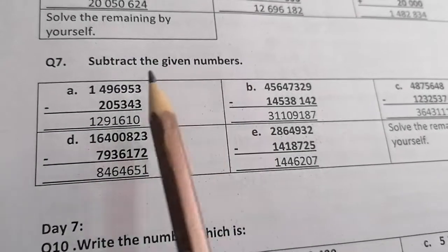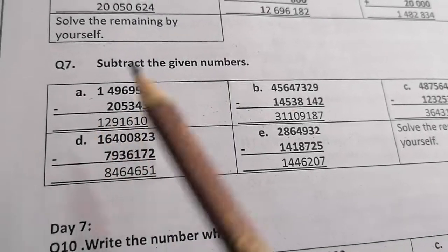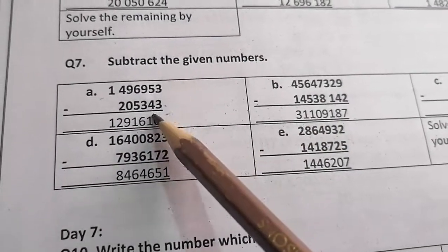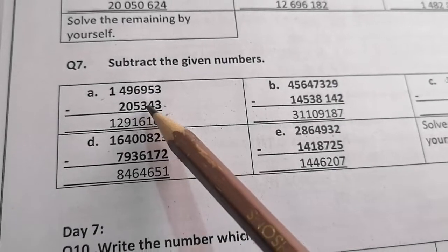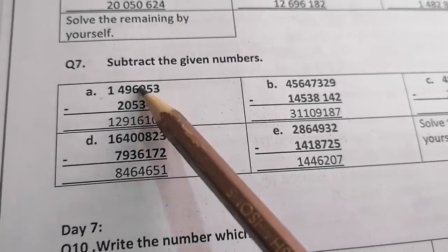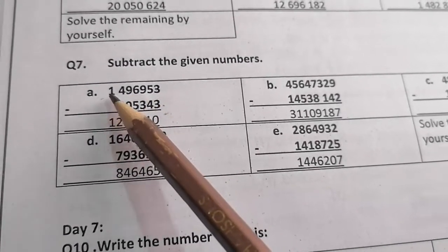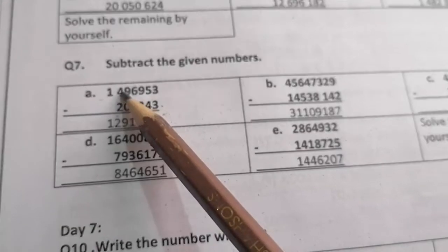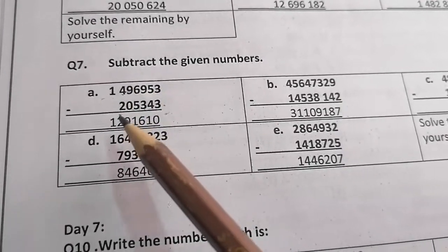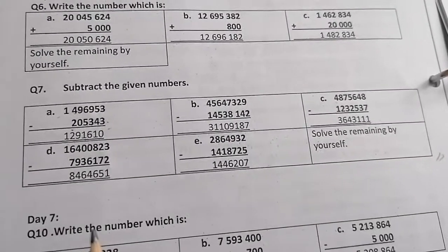Subtract the given numbers. The first value is this. We have to subtract this value from this. 3 minus 3 is 0. 4 minus 5, we can't, so subtract from 14 is 9, giving 6. 5 from 6 is 1. 0 from 9 is 9. We can't subtract 2 from 4, so we will take carry from here. It becomes 14. Can we subtract 2 from 14? Yes. It will be 12.